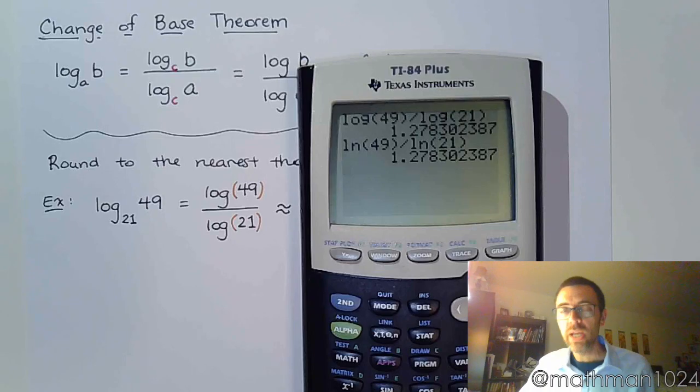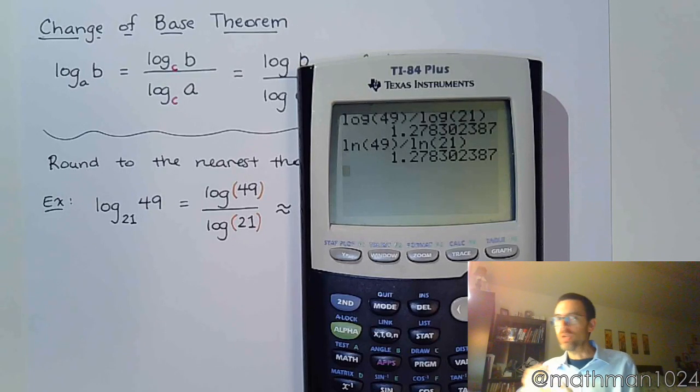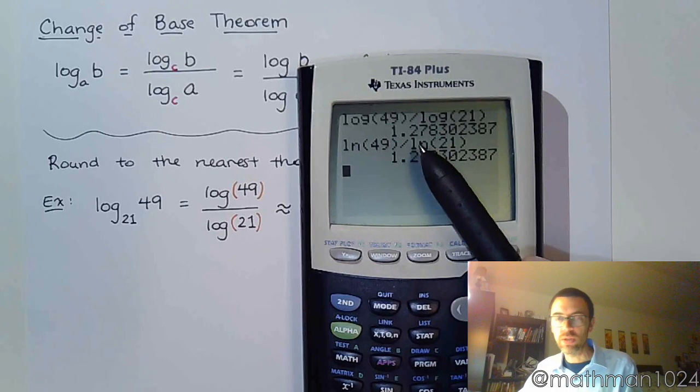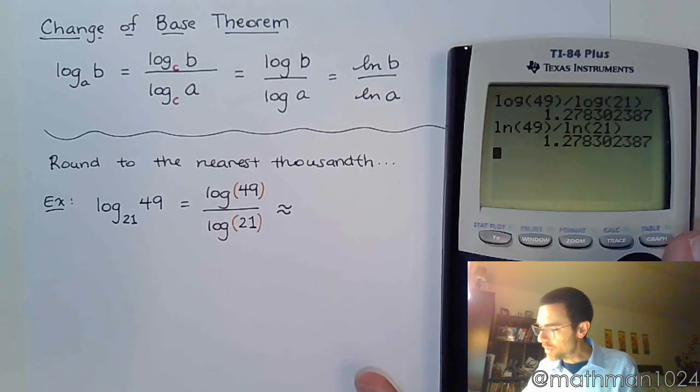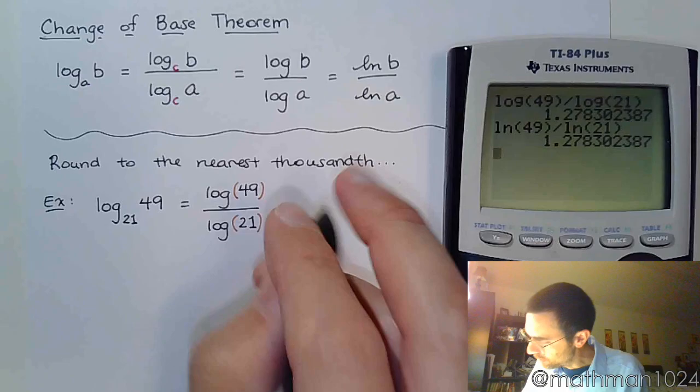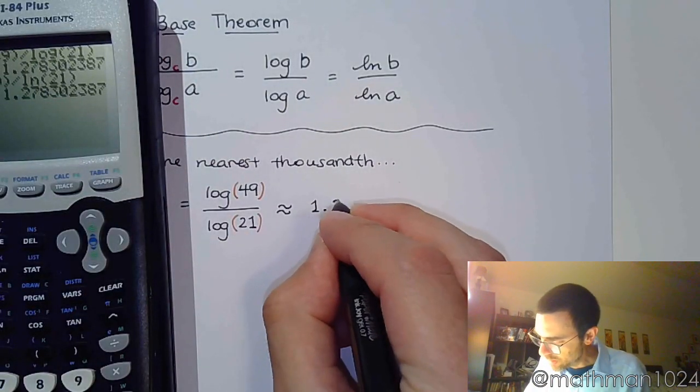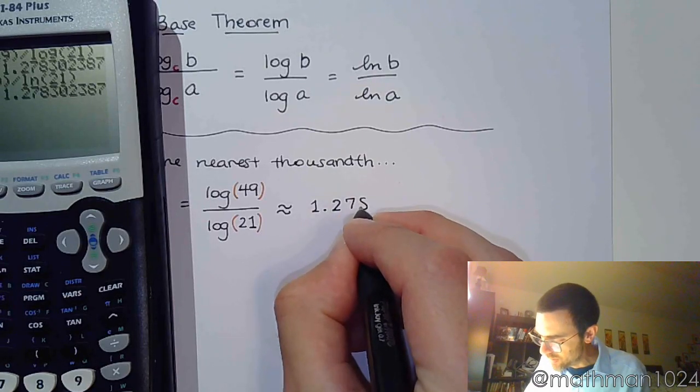What you can't do is that you can't say one is log and one is natural log. They have to both be log or both be natural log. So my approximation rounded to the nearest thousandth is 1.278.